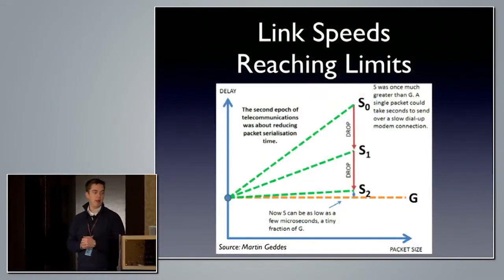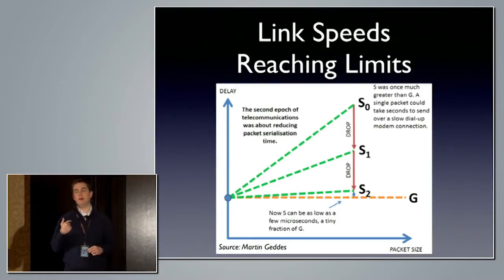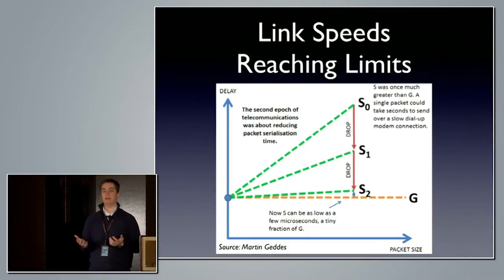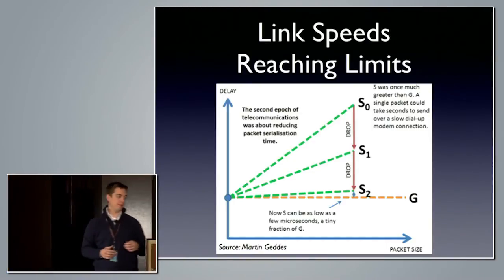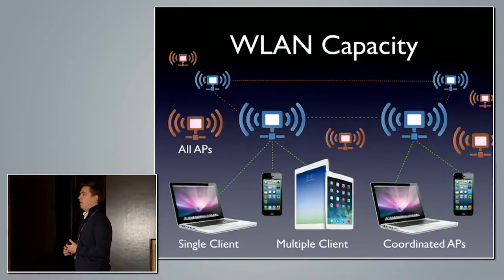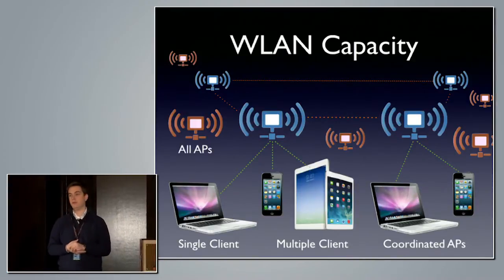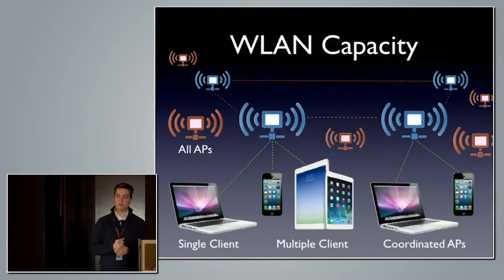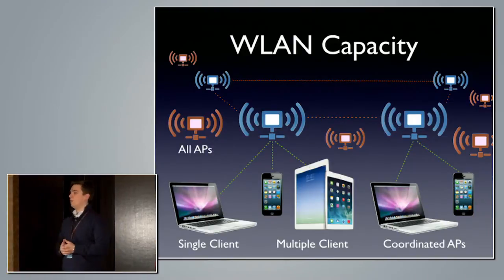When we actually improve bandwidth, we're decreasing packet serialization delay — they're very closely related. Wireless network capacity is built on multiple factors: single client throughput, multiple client throughput, coordinated APs, co-channel interference, external interference from other access points, and external interference that may raise the noise floor from non-Wi-Fi sources. We need to take all of that into account.